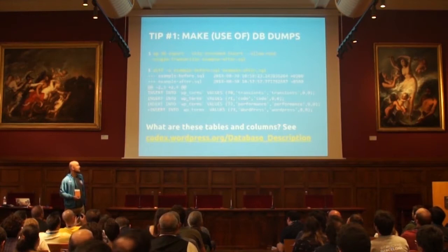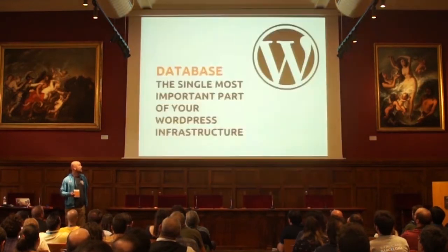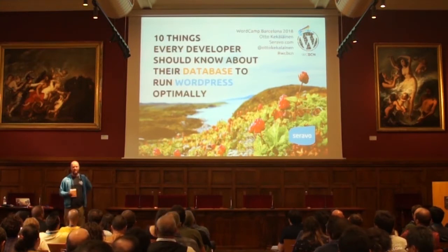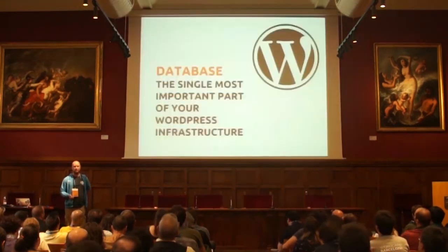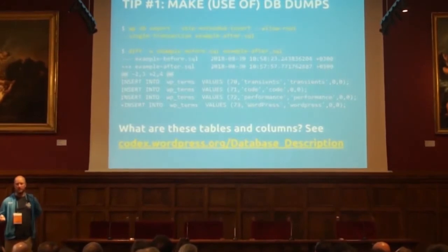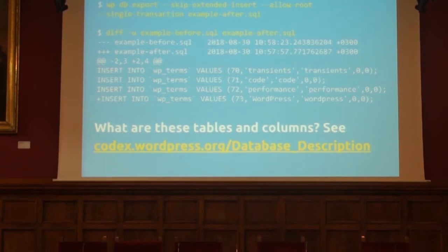Here is the command I use to make database dumps. My slides have quite a lot of code examples, so you might want to look at them afterwards — I will post my slides on my Twitter account. You can make two database dumps before and after you change a setting, and then use diff on the text files to find out what changed in the database. More about the structure of the database: you can see some table names and values, and you can find more in the WordPress Codex.